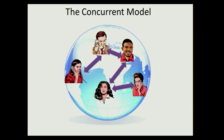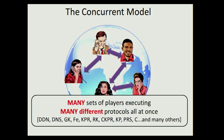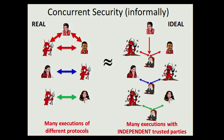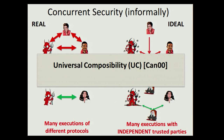But as motivated by the previous talk, this is not how the real world looks like. The real world has many sets of players executing many different protocols all at once. It's possible that an adversary can potentially participate in many protocol executions and launch some kind of coordinated attack. So we want the real world — where many executions of different protocols can simultaneously run — to remain as correct and private as many executions in the ideal world with independent trusted third parties. The most desirable and strongest formulation of this intuitive requirement is universal composability.